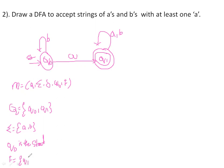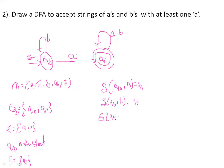For the transition function δ: Q0 on receiving A goes to Q1. Q0 on receiving B stays in Q0. Q1 on receiving A stays in Q1. Q1 on receiving B stays in Q1. Also note: in the transition table, the start state should be identified by an arrow mark, and the final state should be identified by a star mark.